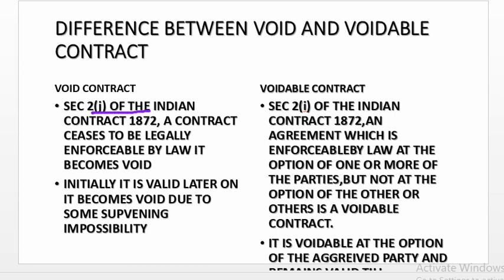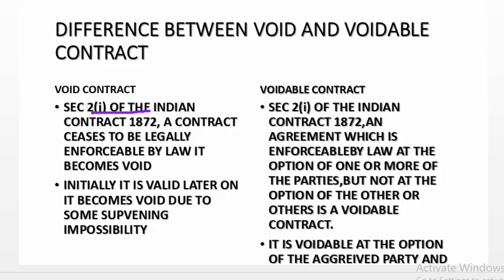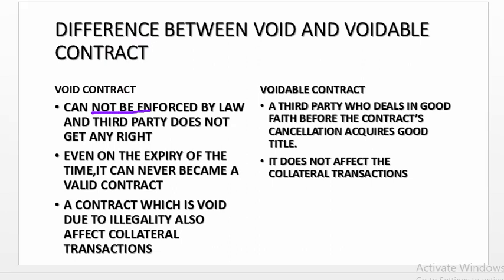It is voidable at the option of the aggrieved party whose consent is not free. Void contract cannot be enforced by law and a third party does not get any right. But in case of a voidable contract, a third party who deals in good faith and is not aware that the consent is not free, before the contract's cancellation, acquires good title. Even on the expiry of time, it can never become a valid contract. Voidable contract does not affect the collateral transaction. A contract which is void due to illegality will also affect the collateral transaction.